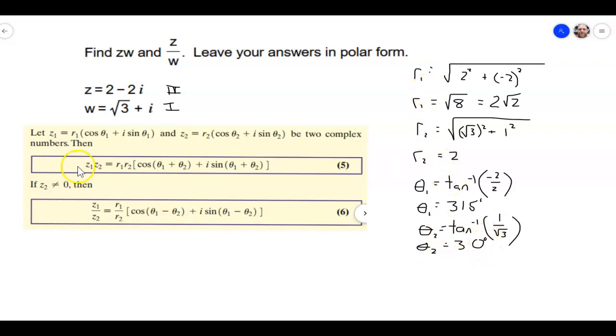So now I've got all of my stuff for these problems. So for the product, so zw, that's going to equal R1 times R2. So R1 is 2 root 2, R2 is just 2 times the cosine of theta 1 plus theta 2. So that's 315 plus 30. So 315 degrees plus 30 degrees, plus i times the sine of 315 plus 30.